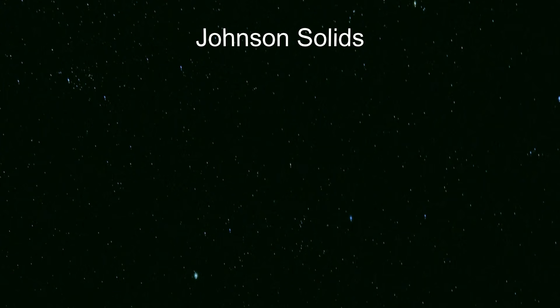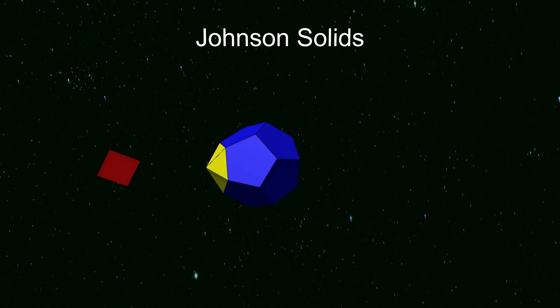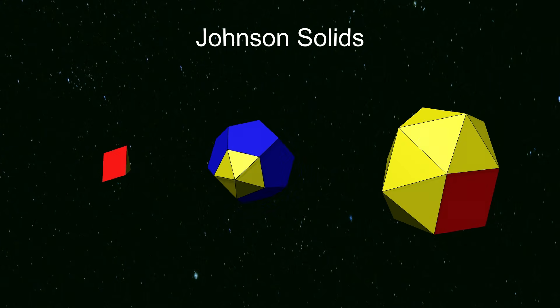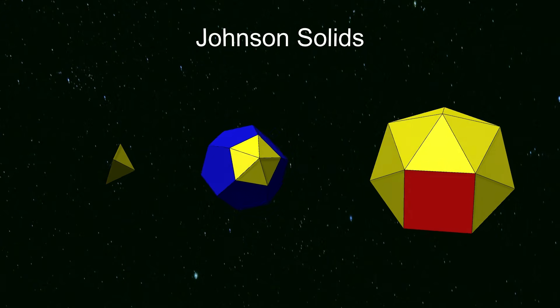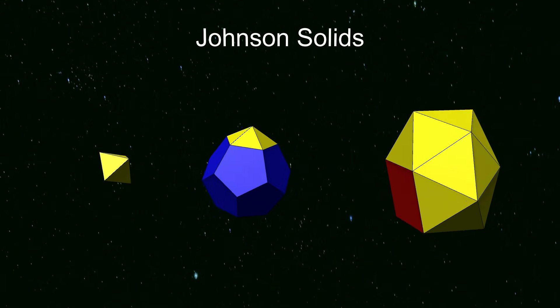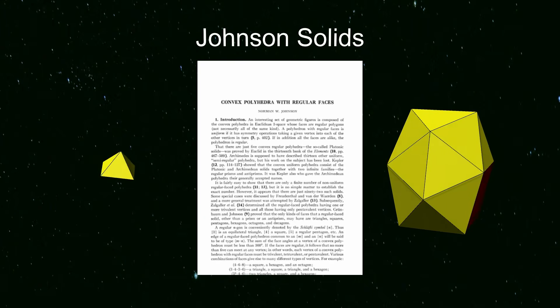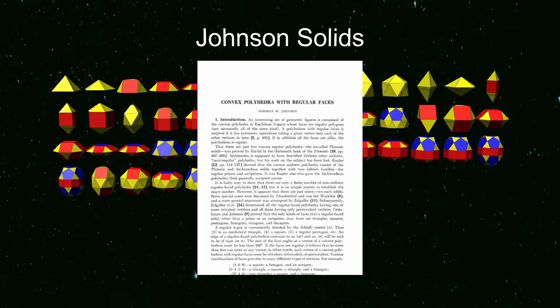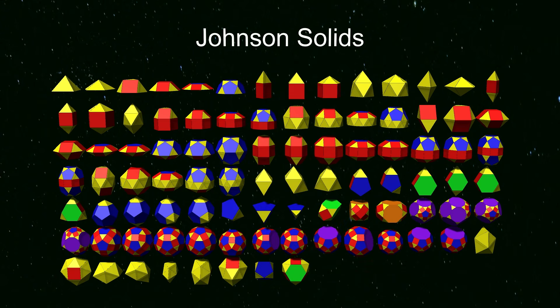So far we have covered all semi-regular polyhedra, but there are many less symmetric convex polyhedra that can be created from regular polygons, such as this square pyramid, a dodecahedron with a pyramid built on one side, or this strange shape. In 1966, American mathematician Norman Johnson published a paper listing 92 such polyhedra, but it wasn't until three years later that Russian mathematician Viktor Zalgaller proved the list was complete. These 92 have become known as the Johnson solids.